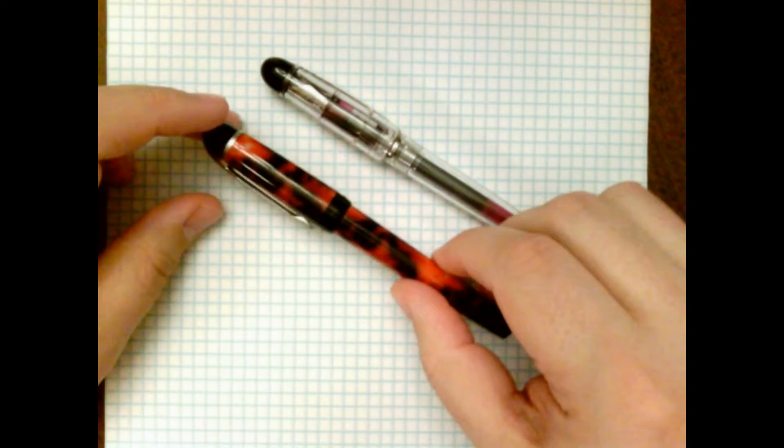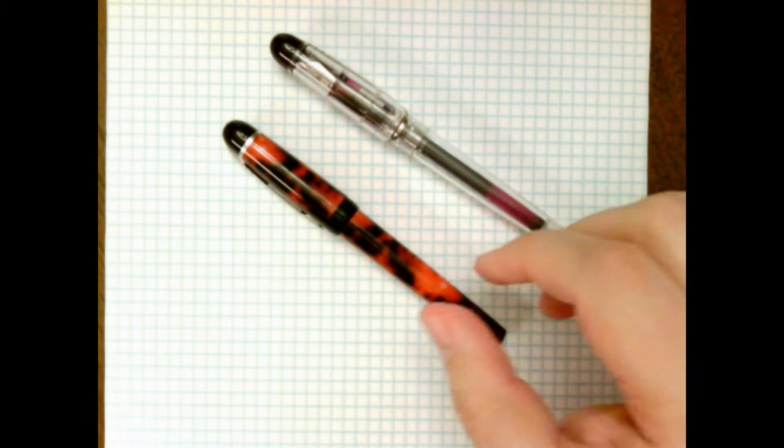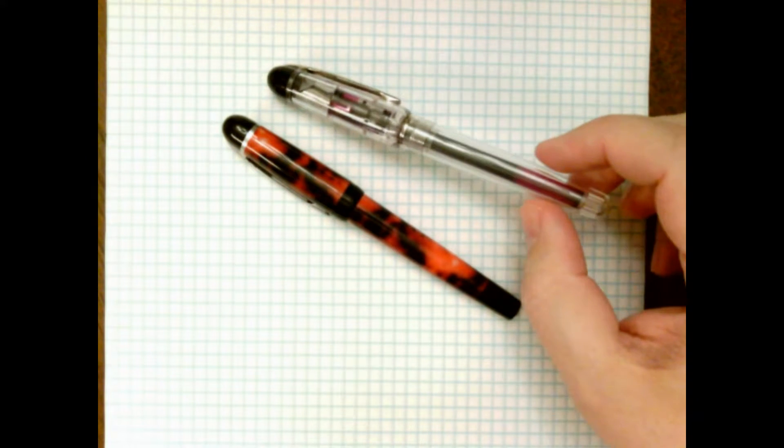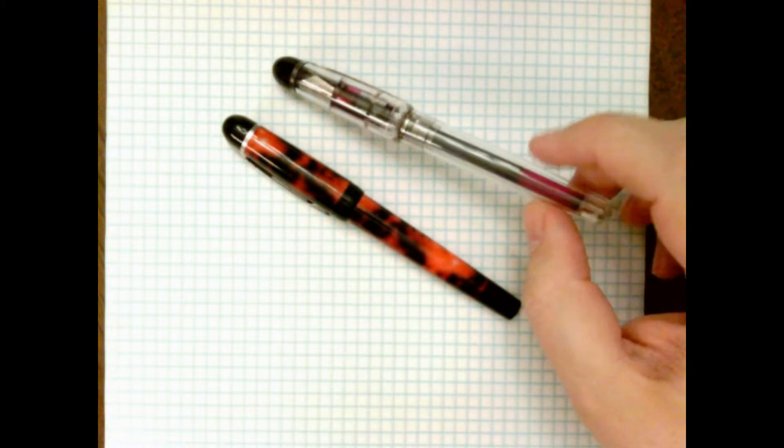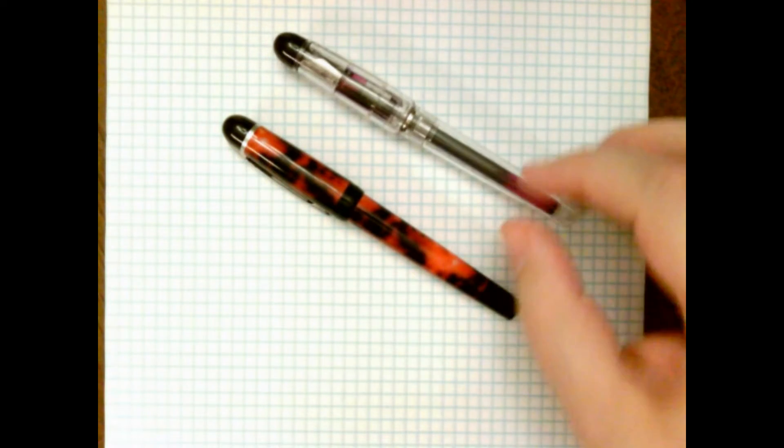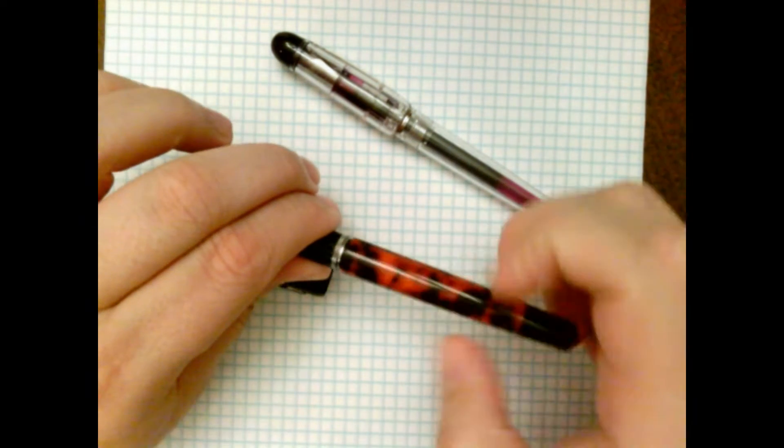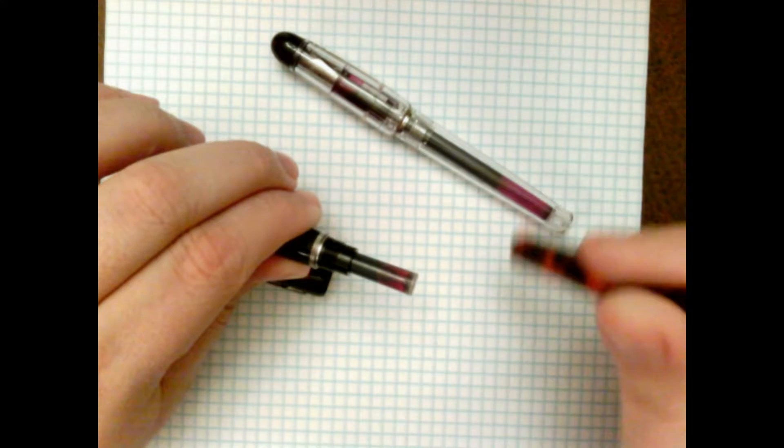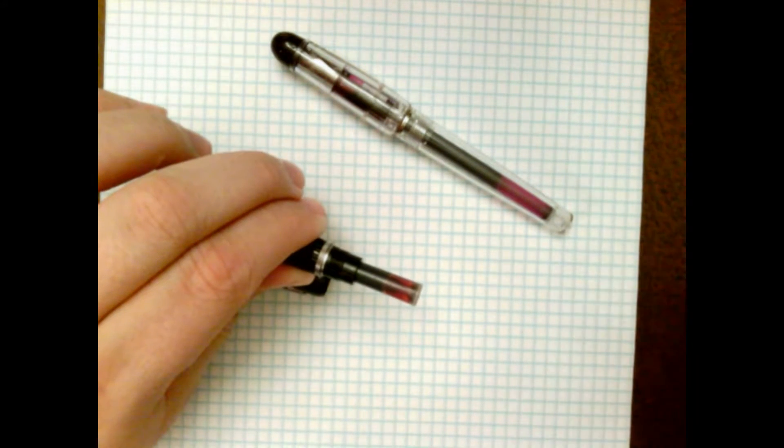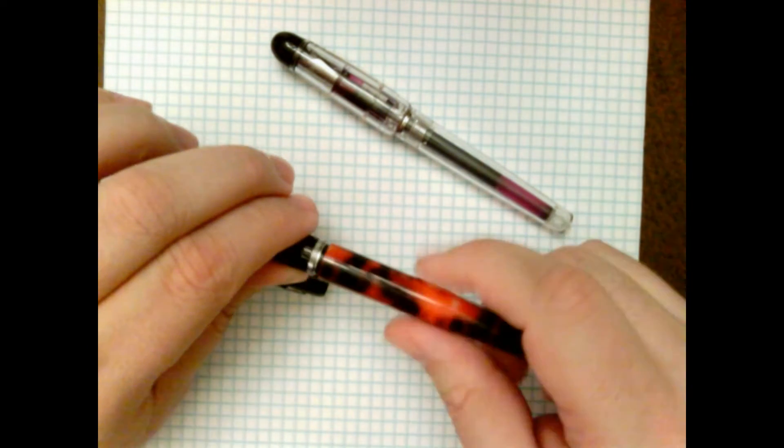They're both cartridge converters, as you can see. I know some people claim that Waterman have proprietary stuff, but I've never had any troubles using Standard International. Both of these are Standard International. This one's a Standard International long, and this one's a Standard International short, as you can see right there. There's definitely a space for a second one in there, but I just haven't bothered to put one in the back there.